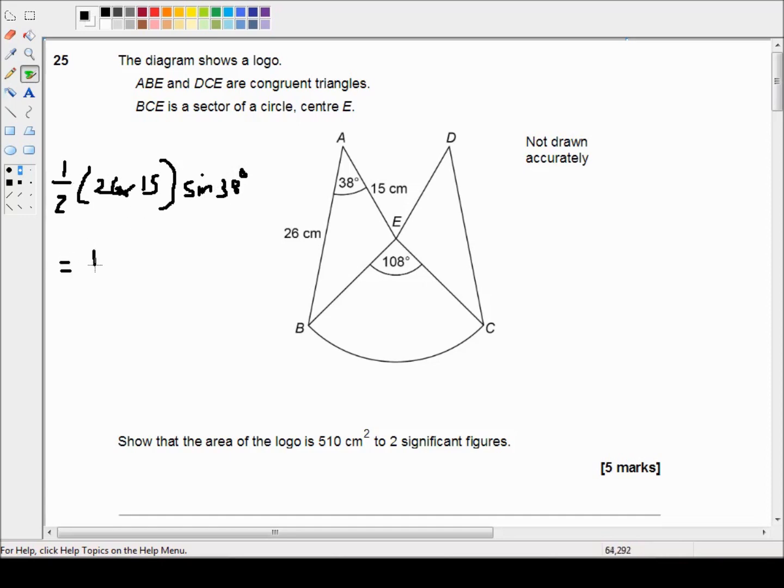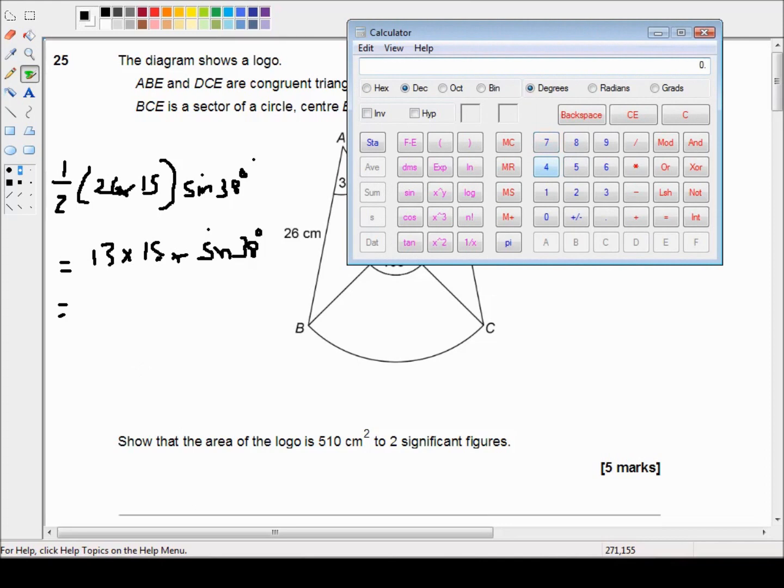And that's equal to 13 times 15 times sine 38. And for this we're going to need a calculator. Okay, so I have my calculator. If I just type in 13 times 15 times 38, check that I'm in degrees and then sine. Of course it might be slightly different on your calculator, so that's why it's important to use your own calculator.